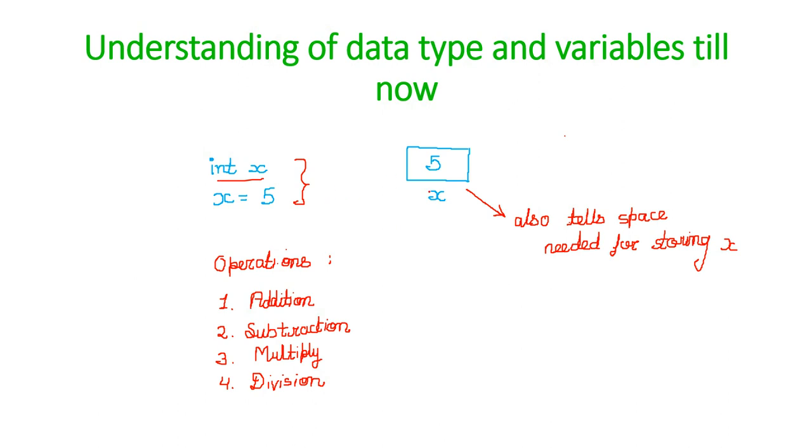It means that x is a variable of integer type. It also tells us how much space would be needed for storing this x. Generally if we say integers are taking 4 bytes in memory, it will allocate a 4 byte space. When I write x equals 5, the 5 will get stored in that location. Also, this data type tells us what operations I can perform on variables of that data type. For integers, I can perform addition, subtraction, multiply, division. Data type is really important.